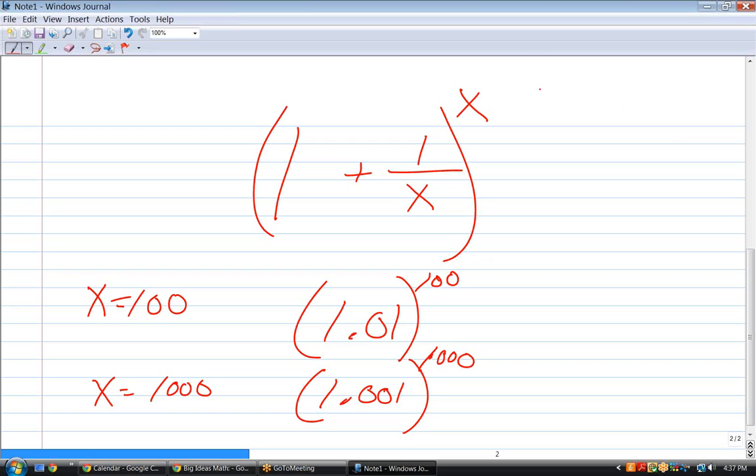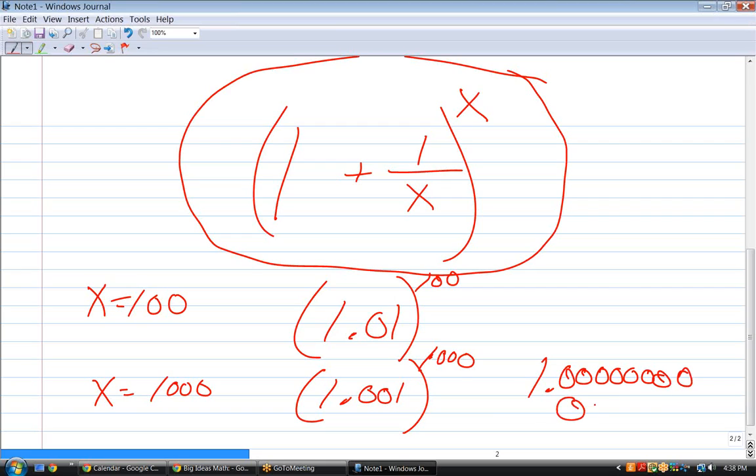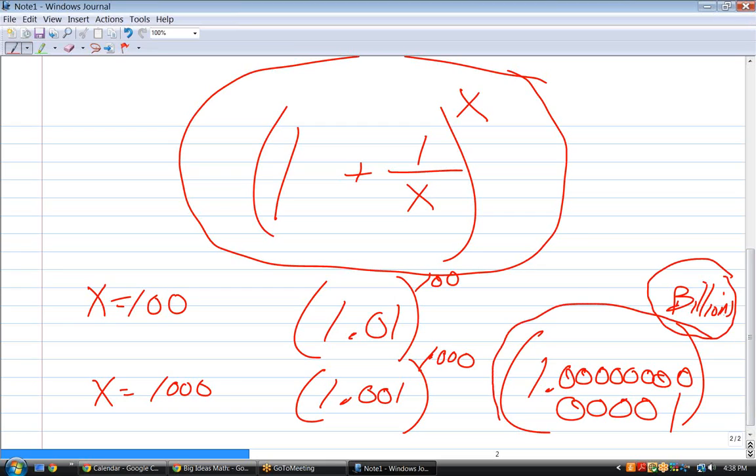The closest thing to one as possible without actually being one. Hold on, let me say one more thing about this. If I take 1.0000000000 and I could add a million zeros to it and I stick a one at the end, and if I take that to the billionth, that's a bigger number than one. Yeah, right? I mean, if I take 1.01 to the hundredth power, it's not going to be one, it's going to be some number bigger than one. So as the exponent gets bigger and bigger, this number which gets closer and closer to one, you can see that you have two different powers.